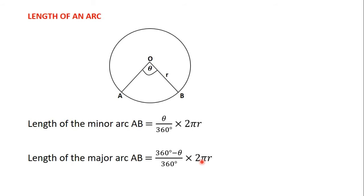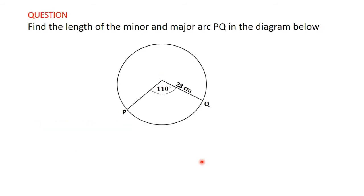Let's use these formulas to solve some questions. Find the length of the minor and major arc PKO in the diagram below. We have this diagram with the arc PKO and we are supposed to find the length of the minor arc PKO and the major arc PKO. For this question, this point here is O, where O is the center of the circle.